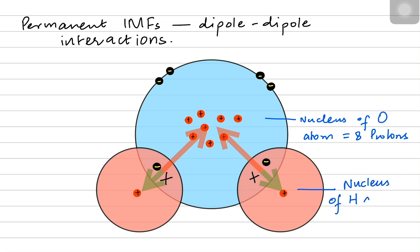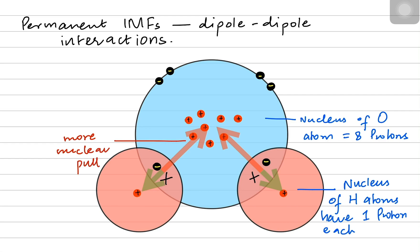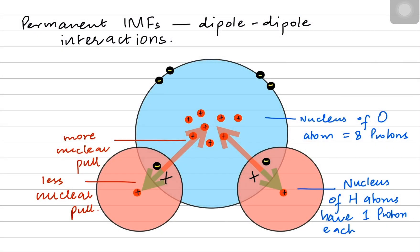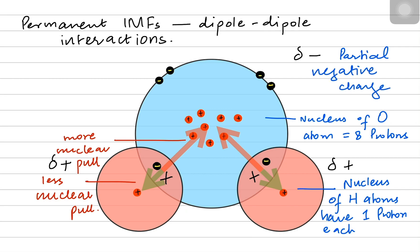Obviously there is more nuclear pull provided by the oxygen atom to the bond pairs as compared to the nuclear pull given by the hydrogen atoms. More nuclear pull will attract the shared pair of electrons towards the oxygen atom, and the electrons will be slightly drawn towards the oxygen atom and away from the hydrogen atom. This creates a partial positivity or partial negativity. Oxygen becomes partially negative because the electrons are a little drawn towards it because of the higher nuclear pull.